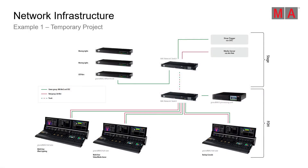Here we can see one network infrastructure for a temporary project. At the bottom, we can see different consoles offering a multi-user environment: one console for effect lighting, one for the video and media server operator, and a backup console. All these consoles combined in a network deliver this multi-user environment. Next to the control devices, we also have to take care of our network backbone — you can see some network switches which deliver connectivity for all devices.